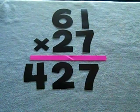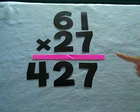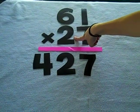Step 2. Put a zero as your placeholder because you are now going to multiply the tens column.